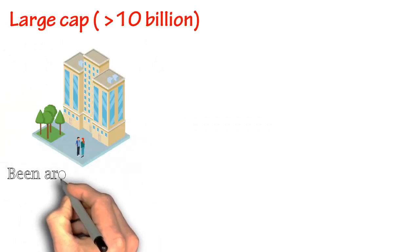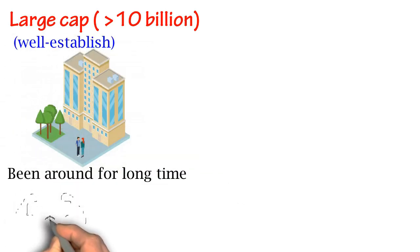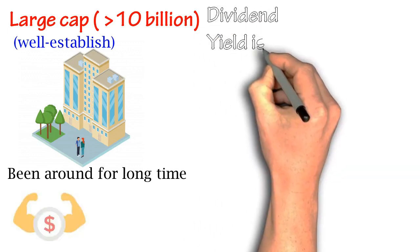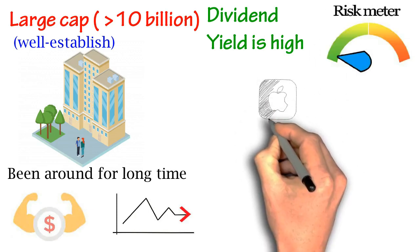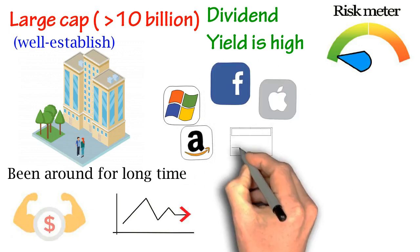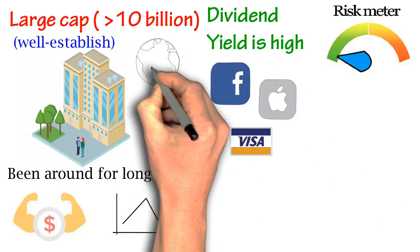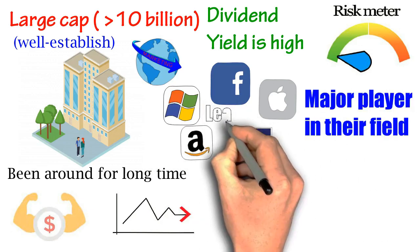Large cap is comprised of huge companies which have already existed for a decade or more and are well-established. These companies have a strong and stable financial status, and normally give a lot of dividends. Because of the high dividend yield and strong financial status, this kind of stock does not move much in share price and the risk is the lowest. Some examples are Apple, Microsoft, Amazon, Facebook, and Visa — all well known globally and major players in their respective fields.